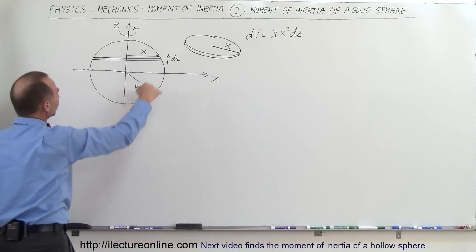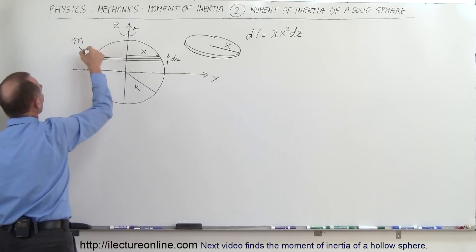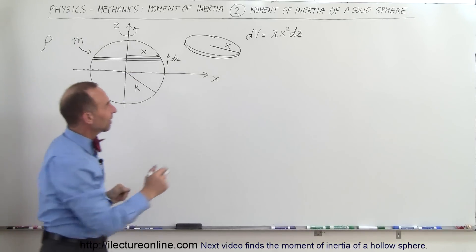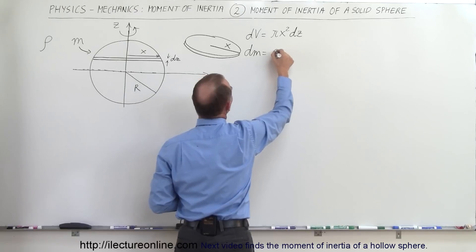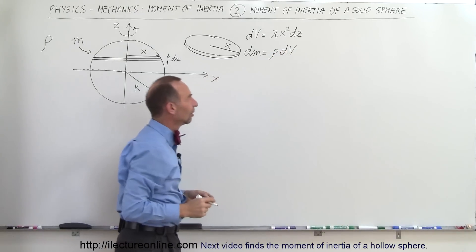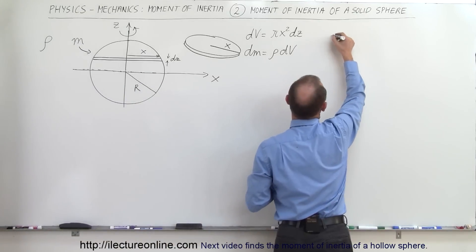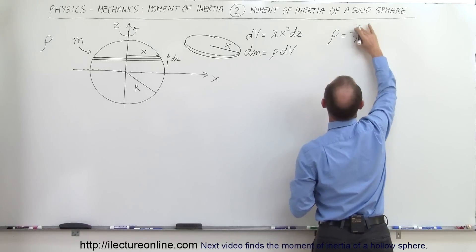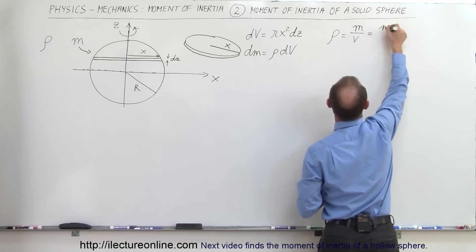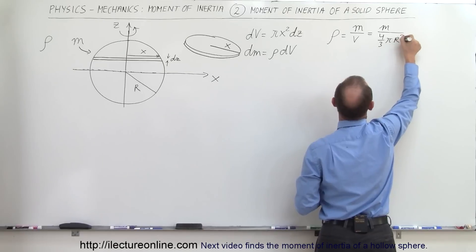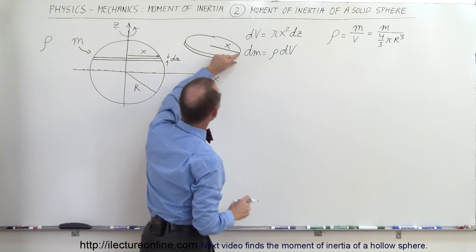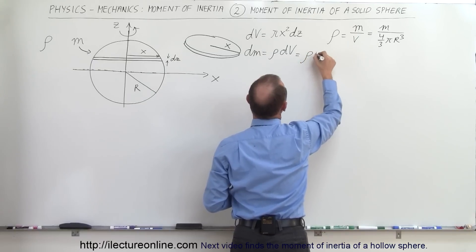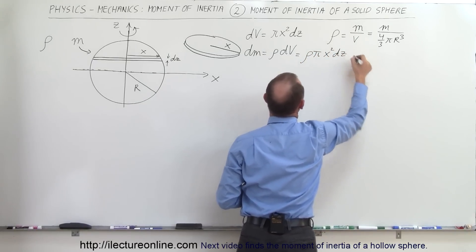If the mass of the whole sphere is M and rho is the density, then the mass DM of that slice equals the density times the volume. The density rho equals M divided by (4/3)π R³, so the mass of the slice is DM = rho times pi times x² times DZ.